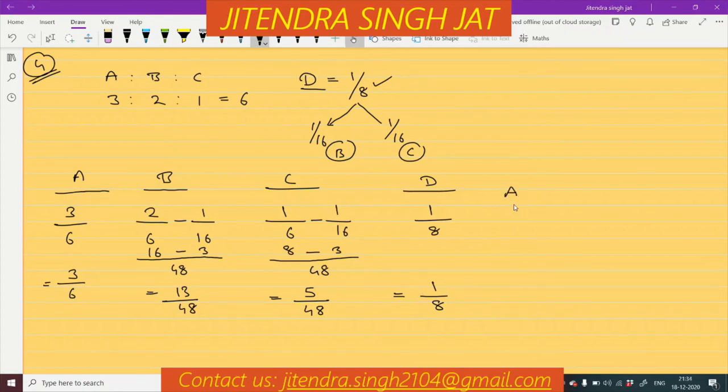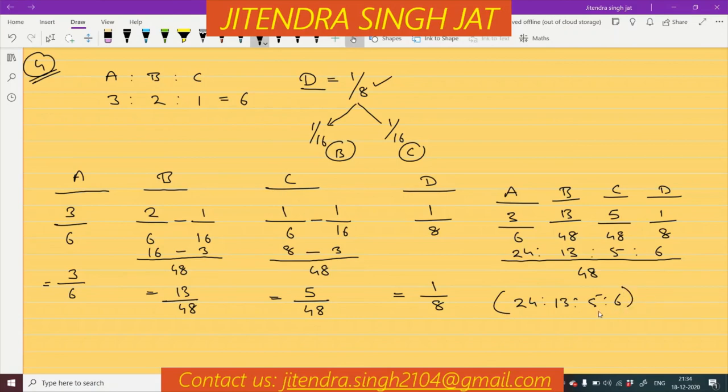So A's share is 3 by 6, B's share is 13 by 48, C's share is 5 by 48, and D's share is 1 by 8. All denominators are different, so we can normalize. 48 will come. 8 times 3 is 24, 48 times 1 is 13, 48 times 1 is 5, 6 times 8 is 48, so 6 times 1 is 6. So dear children, the new profit sharing ratio among the partners is 24:13:5:6. I hope the question is clear to everyone.